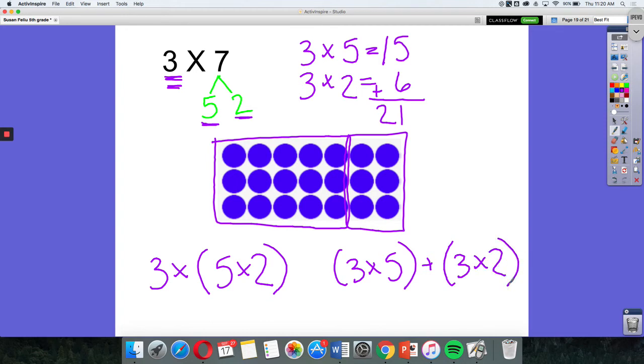Now, I broke apart the 7 into 5 and 2 because that's what makes sense to me. There are other ways that you could have broken this apart. We could have broken apart the 7 into 4 and 3. We could have broken it into 1 and 6, whatever we're comfortable with.